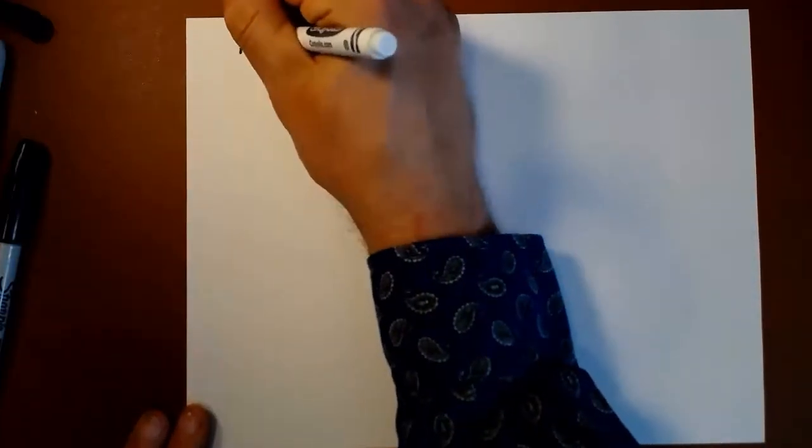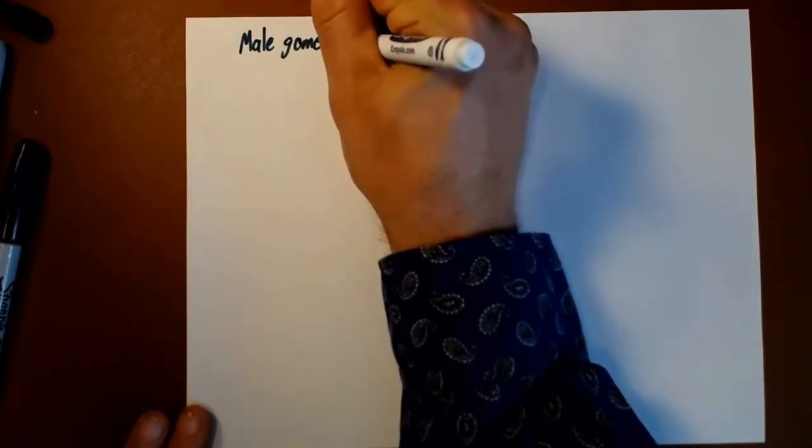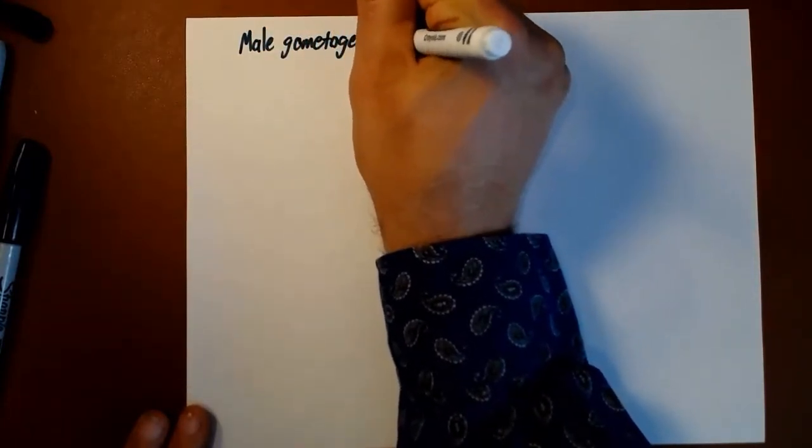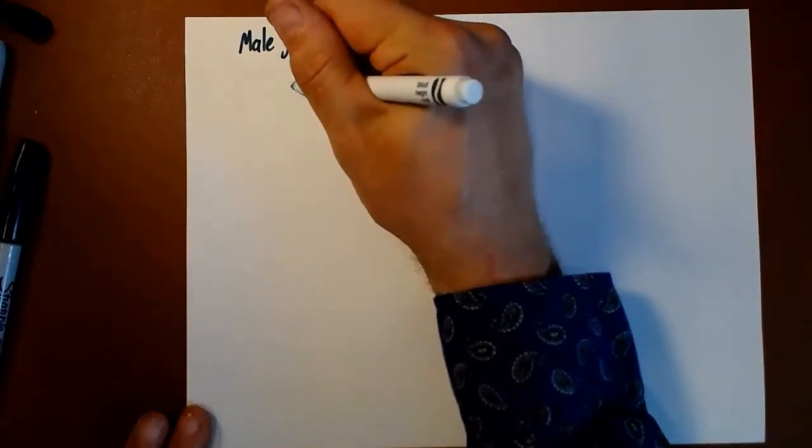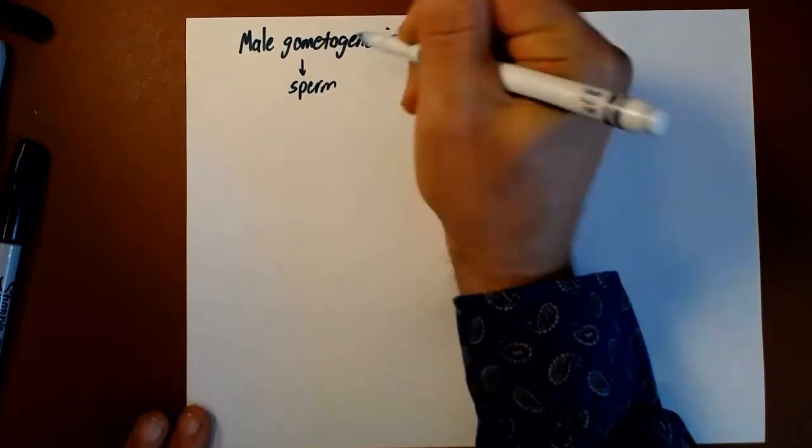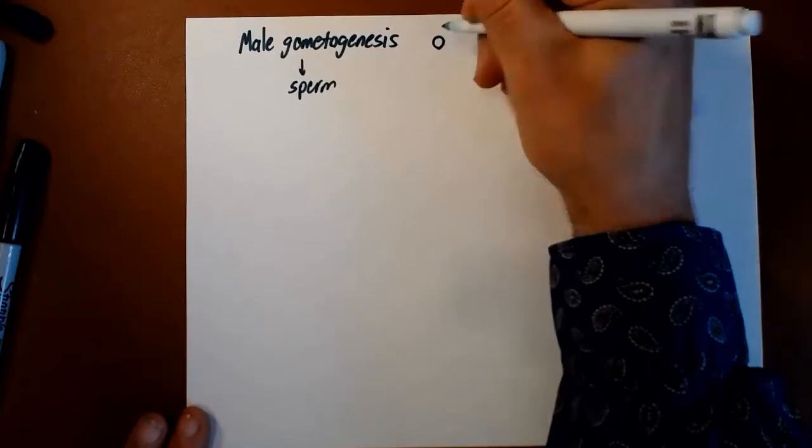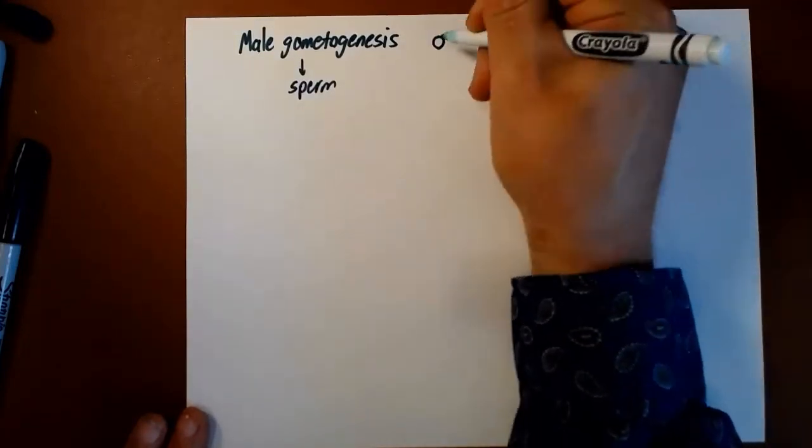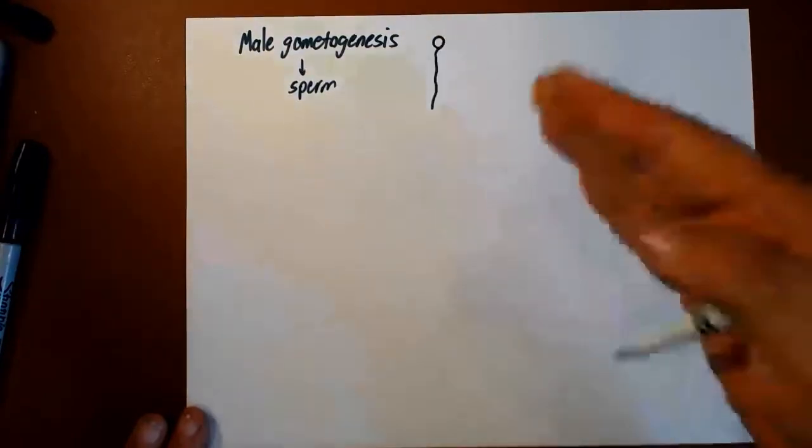Let's talk about male gametogenesis, which is sperm production. Male gametes are sperm. You're probably familiar with what mature sperm look like. Mature sperm have a small head which contains nothing but a nucleus and a flagella that they can beat to swim.